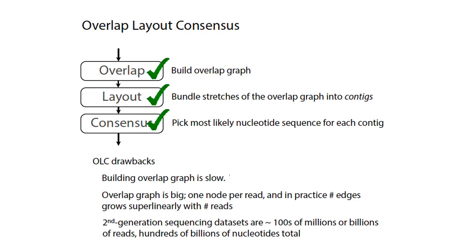That's basically the overlap layout consensus approach. It's worth noting that in practice these methods aren't really used for large genomes. Building these graphs is slow, and the graphs are large in the sense that you have one node per read. If you're doing really deep sequencing with hundreds of millions of reads, these graphs become huge, making pruning and even visualizing them very hard. The overlap layout consensus approach isn't particularly well used today, but I'm presenting it because it conceptually gives you a way of thinking about genome assemblies, and some form of this is used in many current assemblers.